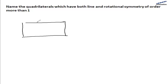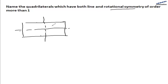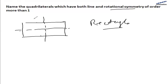This is basically when opposite sides are equal. We have two lines of symmetry, and the order of rotational symmetry is also two, because after every 180 degrees this figure is going to repeat itself. So this rectangle is the figure which has both line symmetry and rotational symmetry of order more than one.